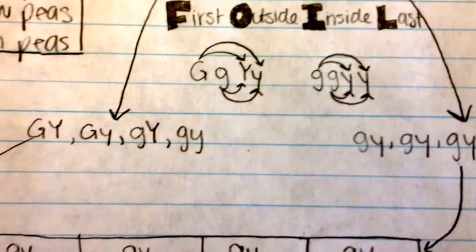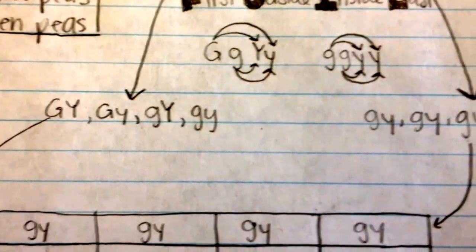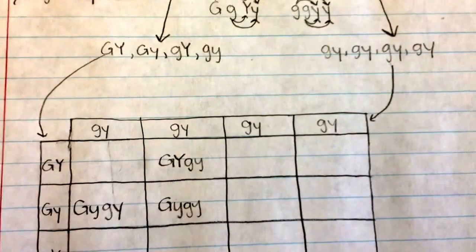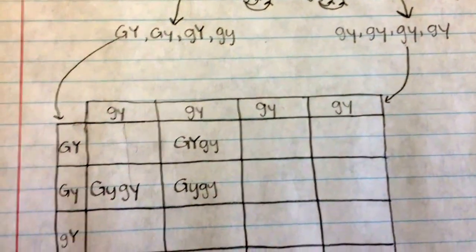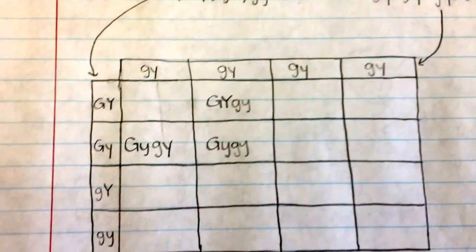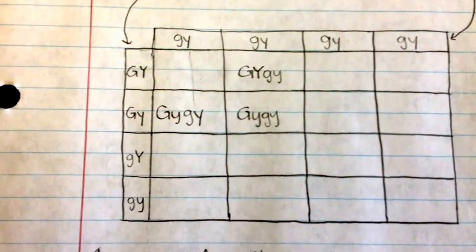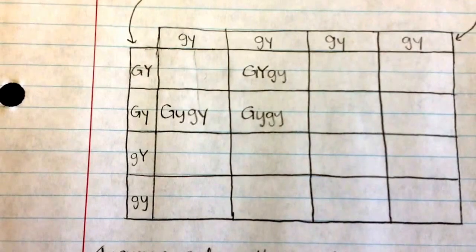Since this is a dihybrid cross, we should end up with four different possibilities. Next, we put the segregated alleles into the Punnett square and combine the alleles from both sides to make one diploid allele.